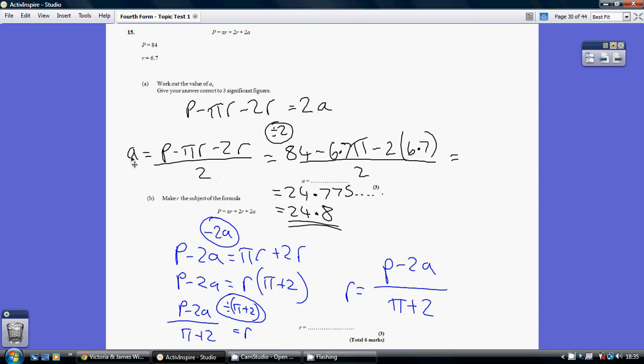Then divide by 2, giving us a equaling this. Substituting the values that we've been given and rounding to three significant figures, we get 24.8.